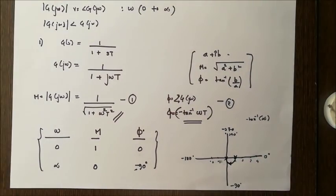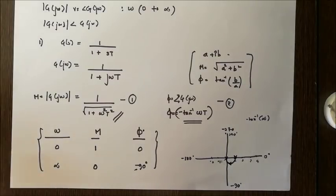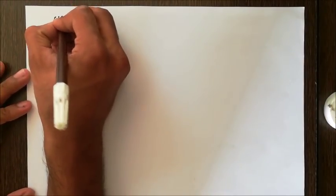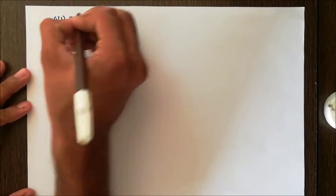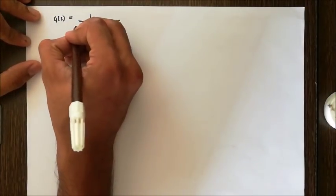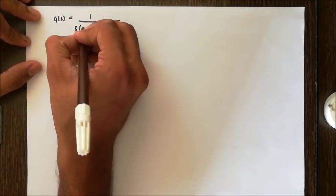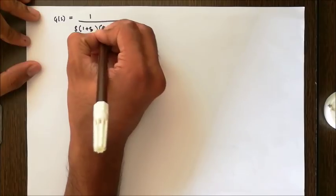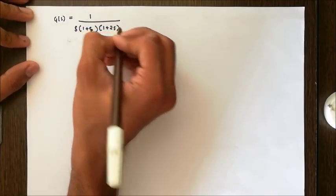Now let's do it with a real graph sheet and a real question. Suppose we are given G(s) = 1 / [s(1 + s)(1 + 2s)].